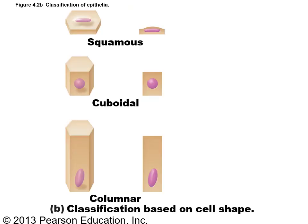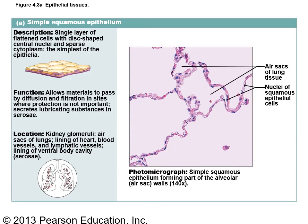Here is a look at the three different shapes. In squamous cells the nucleus appears flat; in cuboidal cells the nucleus is perfectly round; and in columnar cells it's elongated. For the lecture test, you'll want to know where each type of epithelium is located and its characteristics.